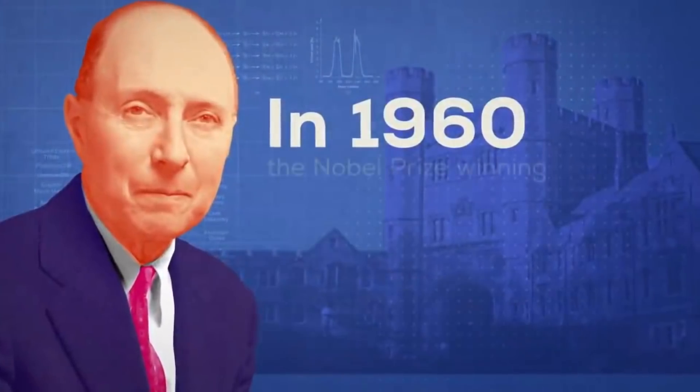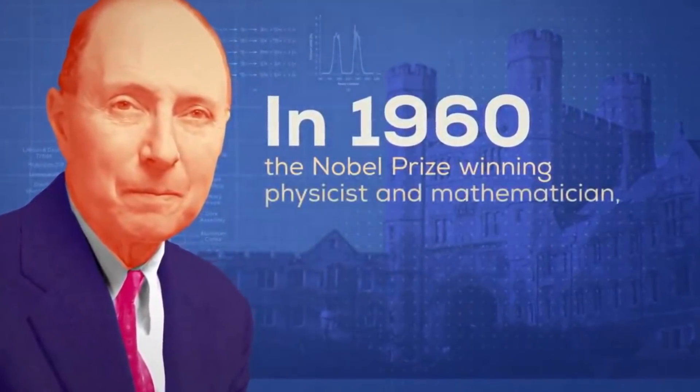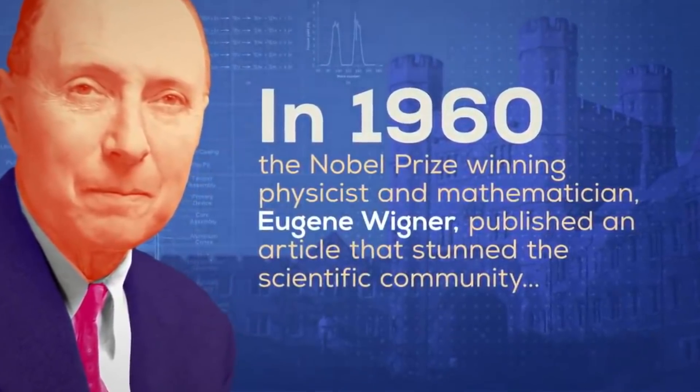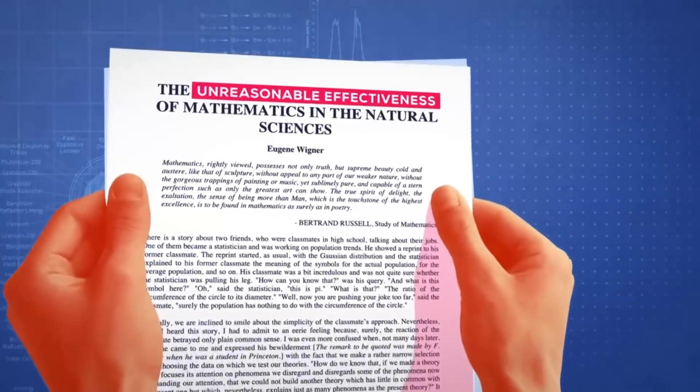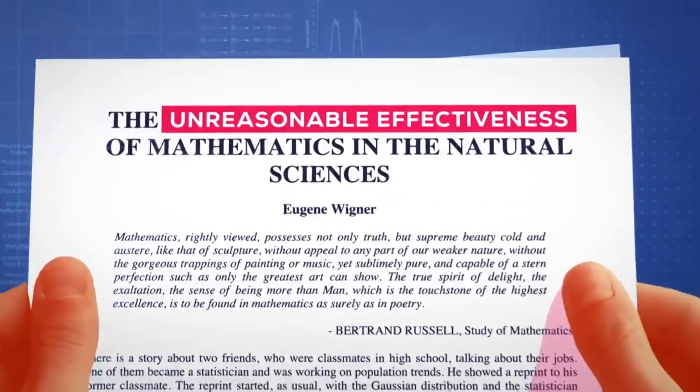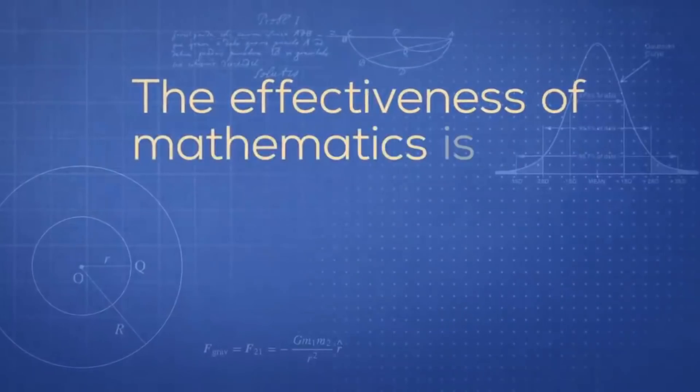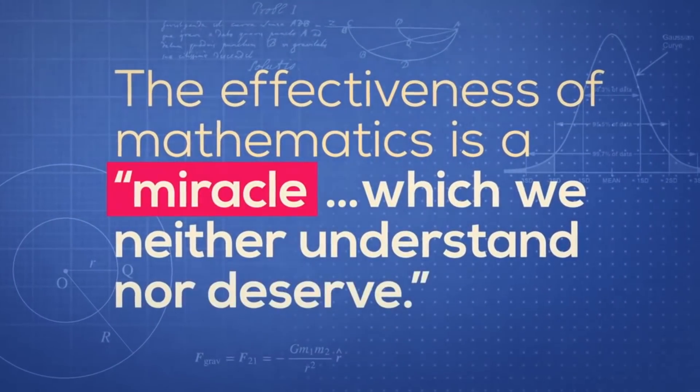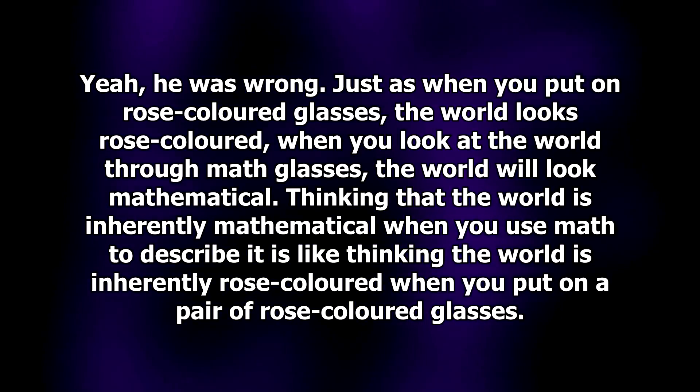In 1960, the Nobel Prize winning physicist and mathematician Eugene Wigner published an article that stunned the scientific community entitled The Unreasonable Effectiveness of Mathematics in the Natural Sciences. Wigner concluded that the effectiveness of mathematics is a miracle, which we neither understand nor deserve. Yeah, he was wrong.